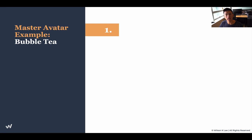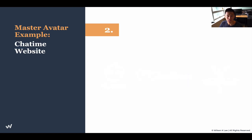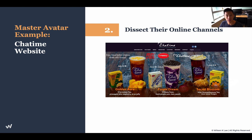Now let's dive into an example of the four steps to create a customer avatar. Step one: find your dream dogs. Let's say I want to create a bubble tea shop. In Vancouver, locally, the three biggest bubble tea shops are Coco, Cha Time, and The Alley. After identifying them, I go to their online channels, and for this example we're going to dive into Cha Time — one of the more popular Asian bubble tea chains.